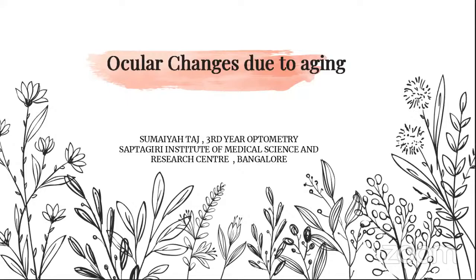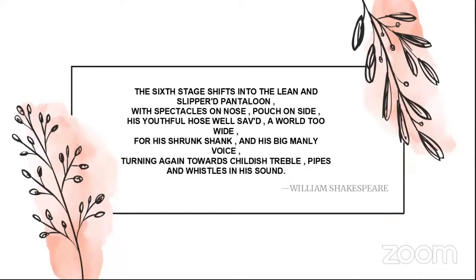Thank you so much. Hello, good evening, everybody. My name is Sumaiya, and my topic for today is Ocular Changes Due to Aging. 'The sixth stage shifts into the lean and slippered pantaloon, with spectacles on nose, pouch on side. His youthful hose well-saved, a world too wide for his shrunk shank, and his big manly voice turning again toward childish treble, pipes and whistles in his sound.' This is a very famous poem by William Shakespeare, where he talks about the changes in the stages of life — in the end, where we are old, we have spectacles on our nose and a pouch on side.